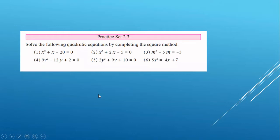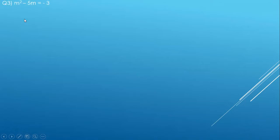Hey friends, welcome back to another video of the quadratic equation series. In the previous video we solved question number 2, that is x squared plus 2x minus 5 equals 0, and in today's video we will be solving the third question.